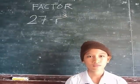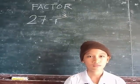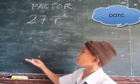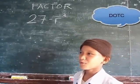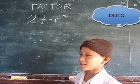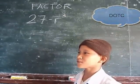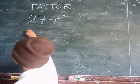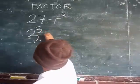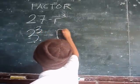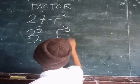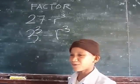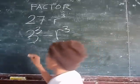Factor 27 minus r³. To factor this, we write it in the form of difference of two cubes, then determine the factors.